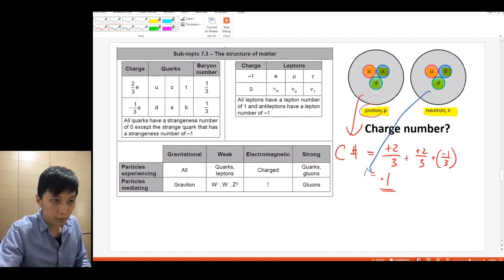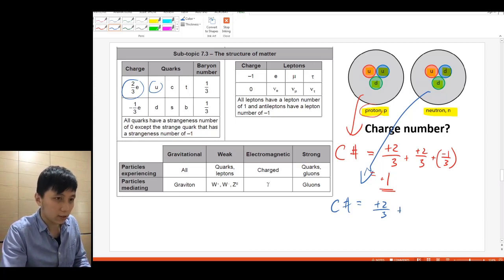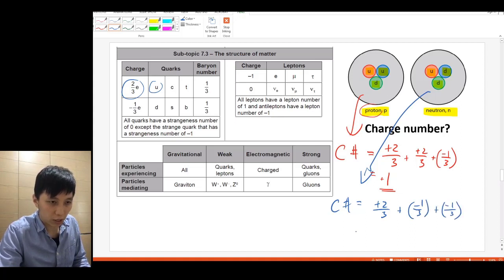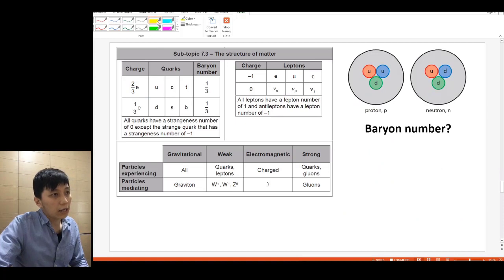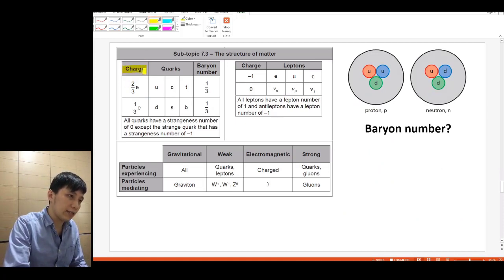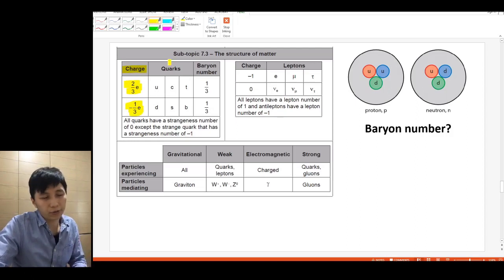Next, for neutron, the charge number will then be U, which we have mentioned earlier, is positive 2 over 3, by looking at the left-hand side column. And then you have 2 down quarks. So each of them will contribute negative 1 over 3. And so let's just write it out. And if you try to calculate again, obviously, it's going to be 0, and again, coincide with what we understood as neutron being neutral, so 0 charge. So now you have basically mastered the idea of how to find and calculate the charge of the quarks when they are put together.